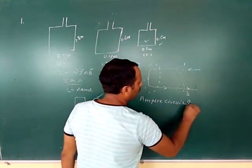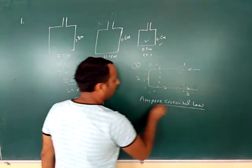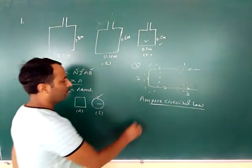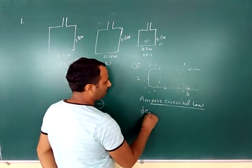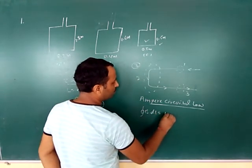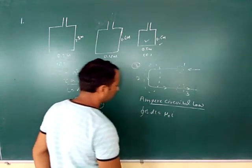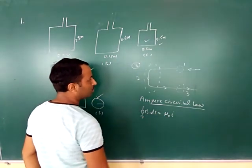Ampere Circuital Law. So what is Ampere Circuital Law? B dot DL is equal to mu0 times current I. This is the first loop.